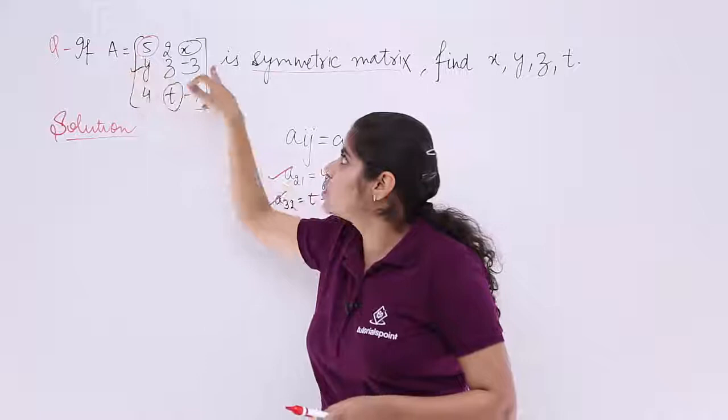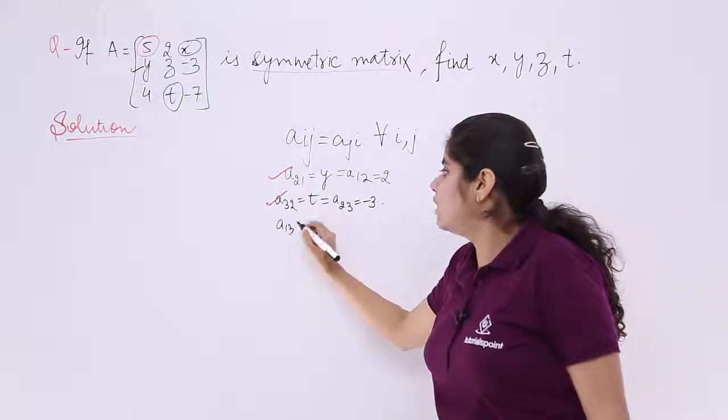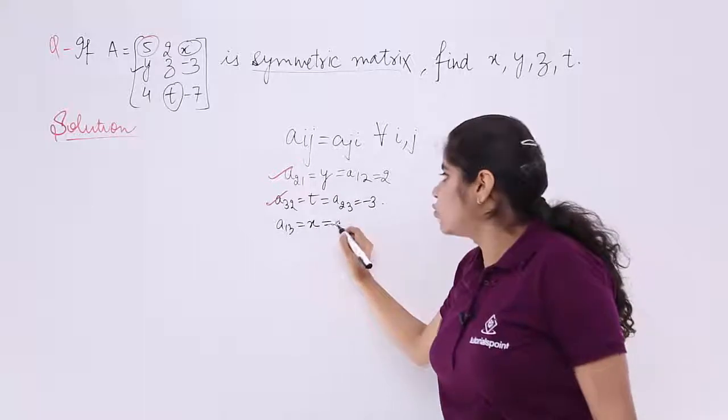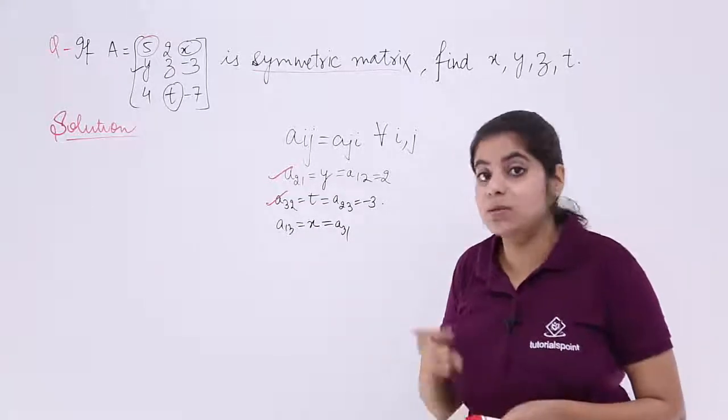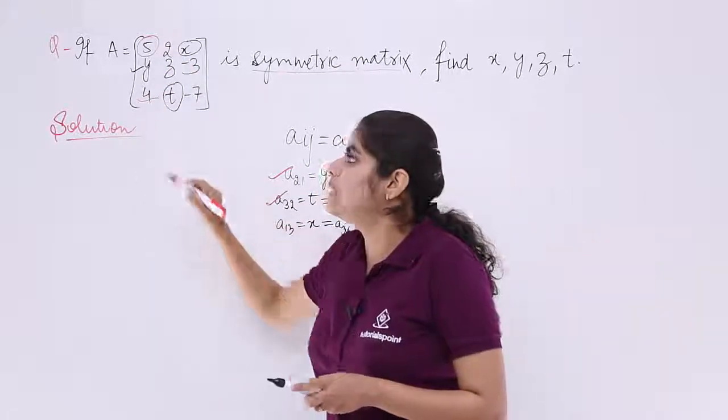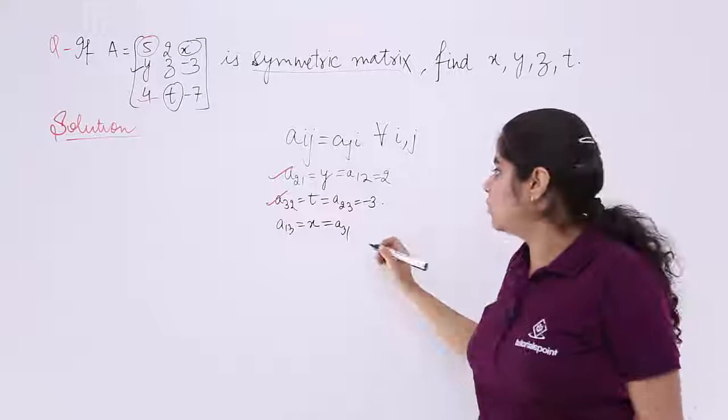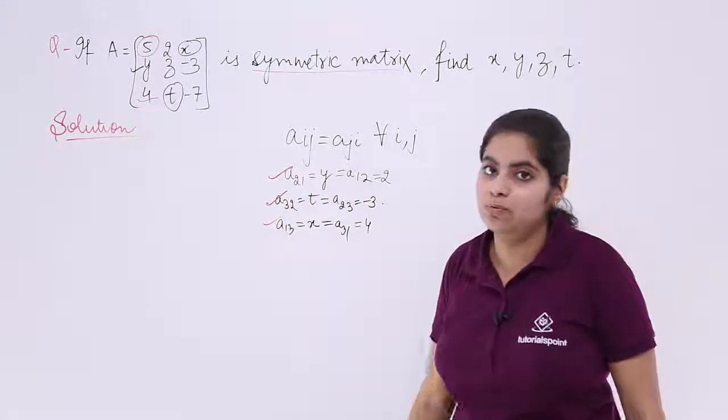x is in the first row and the third column, so it is A_13. A_13 is equal to x and it should be equal to A_31. Why? Because we know that it is a symmetric matrix. What is A_31? Third row, first column. Third row, first column means 4. So it should be equal to 4. So x is also known to me and that is equal to 4.